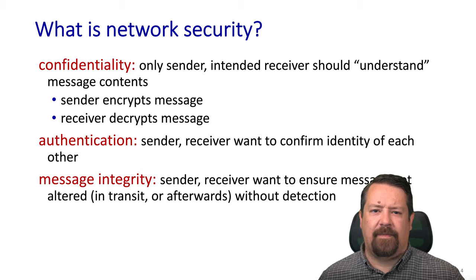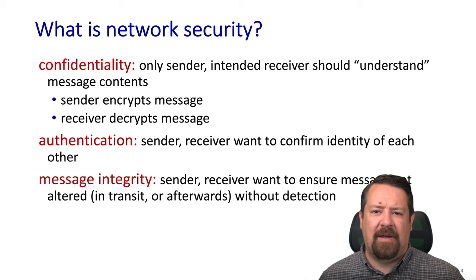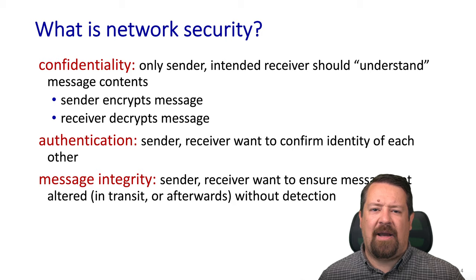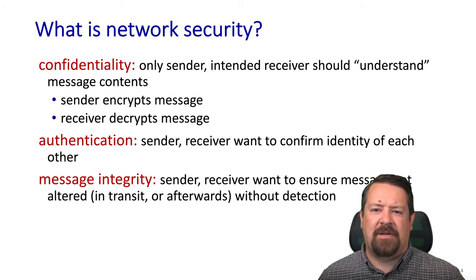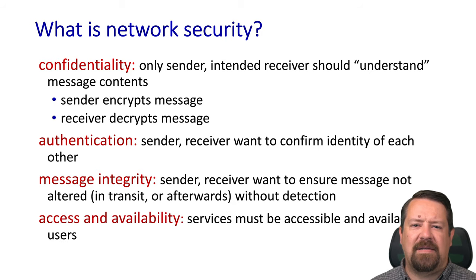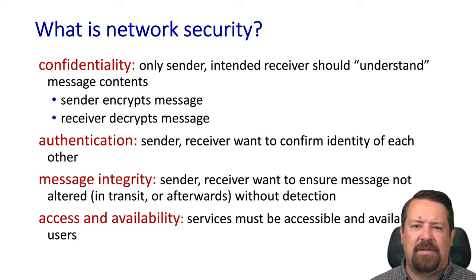Back to basics — the third application common to network security is message integrity. We might not care if a message is read by third parties, but we want to make sure it actually says what it's supposed to when it arrives at the receiver, and that no one has been able to change it along the way without us discovering that. We also have the issue of access and availability. The trick there is that security mechanisms must be available to all users, including non-technical users — they must be seamless and automated so that anyone can benefit from them.